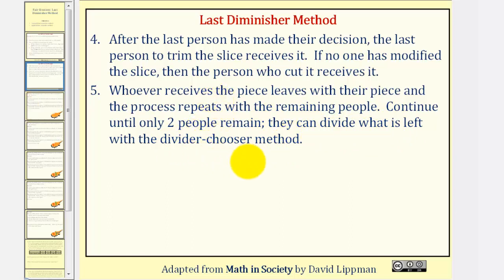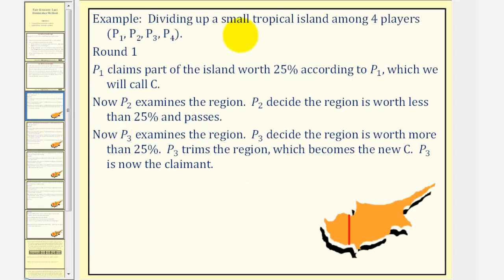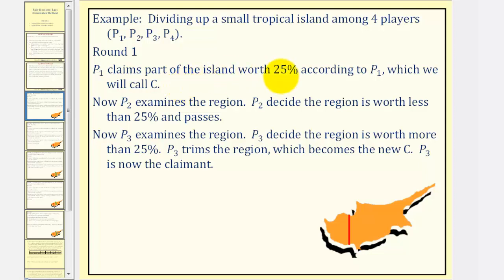Let's walk through an example of dividing up a small tropical island among four players — player one through player four. We'll go in this order. For round one, player one claims part of the island worth twenty-five percent according to their value system, which we'll call C. Notice each person's fair share would be twenty-five percent because we have four players.